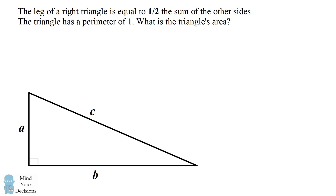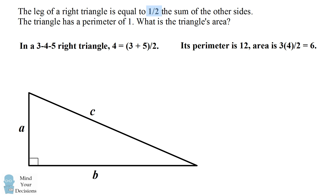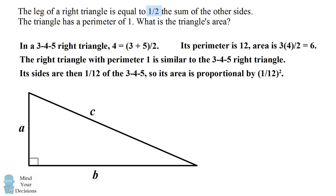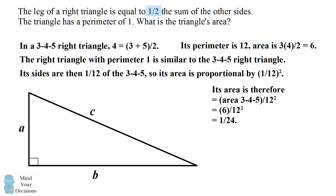You can see how this principle helps with similar problems. If the leg equals one-half the sum of the other sides, think about the 3-4-5 right triangle, where the leg of 4 equals 3 plus 5 divided by 2. That triangle has a perimeter of 12 and an area of 6. For a triangle with perimeter 1, the sides scale by 1/12 and the area scales by 1/144. Scaling the area of the 3-4-5 triangle gives the answer of 1/24.